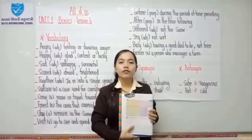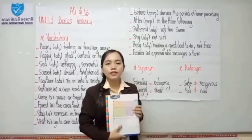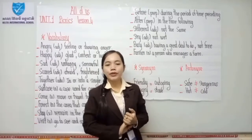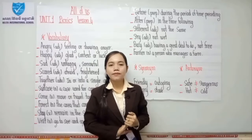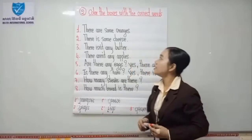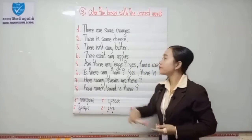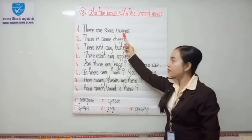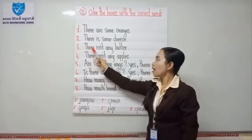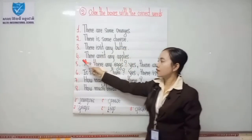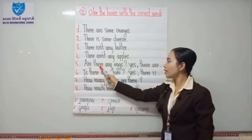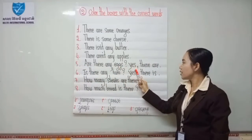Okay, so now let's start exercise number 2 together. Are you ready? Let's check the answers together. Number 1: there are some oranges. Number 2: there is some cheese. Number 3: there isn't any butter. Number 4: there aren't any apples. Number 5: are there any eggs? Yes, there are.